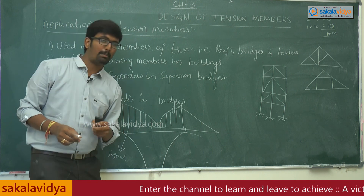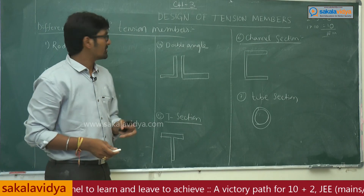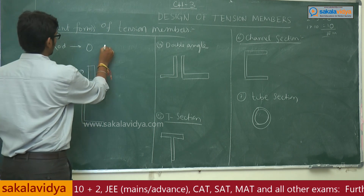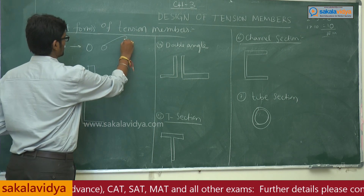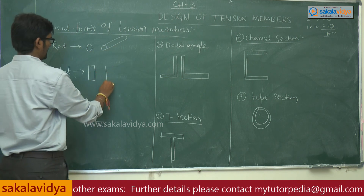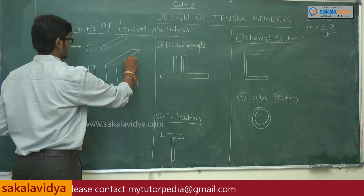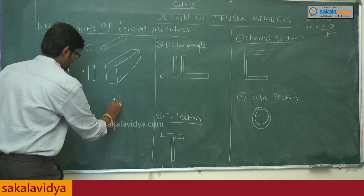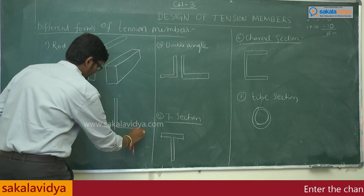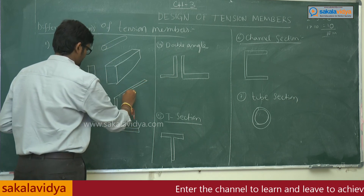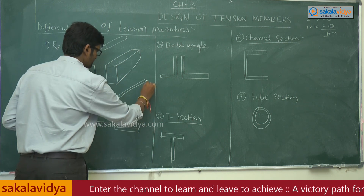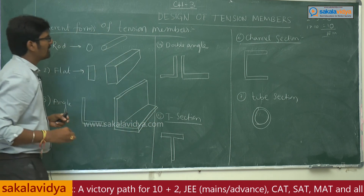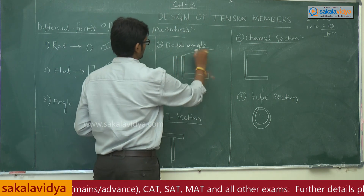The different forms of tension members are: first, a rod, which has a circular cross-section. Next is a flat section. After that is an angle section — the complete view of the angle section looks like an L-shape. Then there is a double angle section.